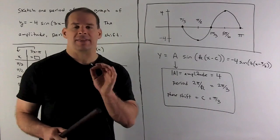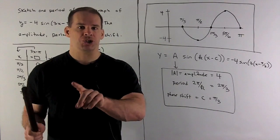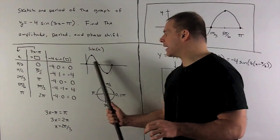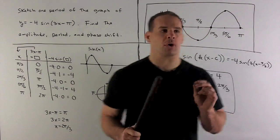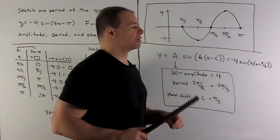To get the phase shift, we can just note how our period jumped from its original spot — it's just going to move over by pi thirds.